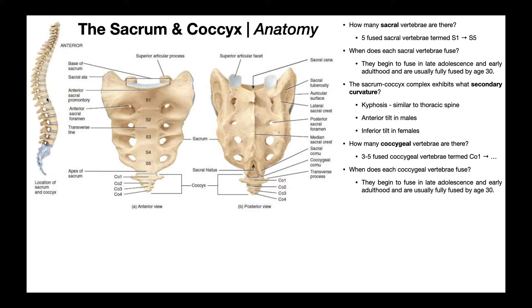So what is the curvature of the sacrum and the coccyx? It looks most similar to the thoracic spine, so we can say it's going to be kyphosis. What's nice about the entire spine is it just alternates: lordosis, kyphosis, lordosis, and then kyphosis. So the sacrum and coccyx collectively have normal kyphosis.